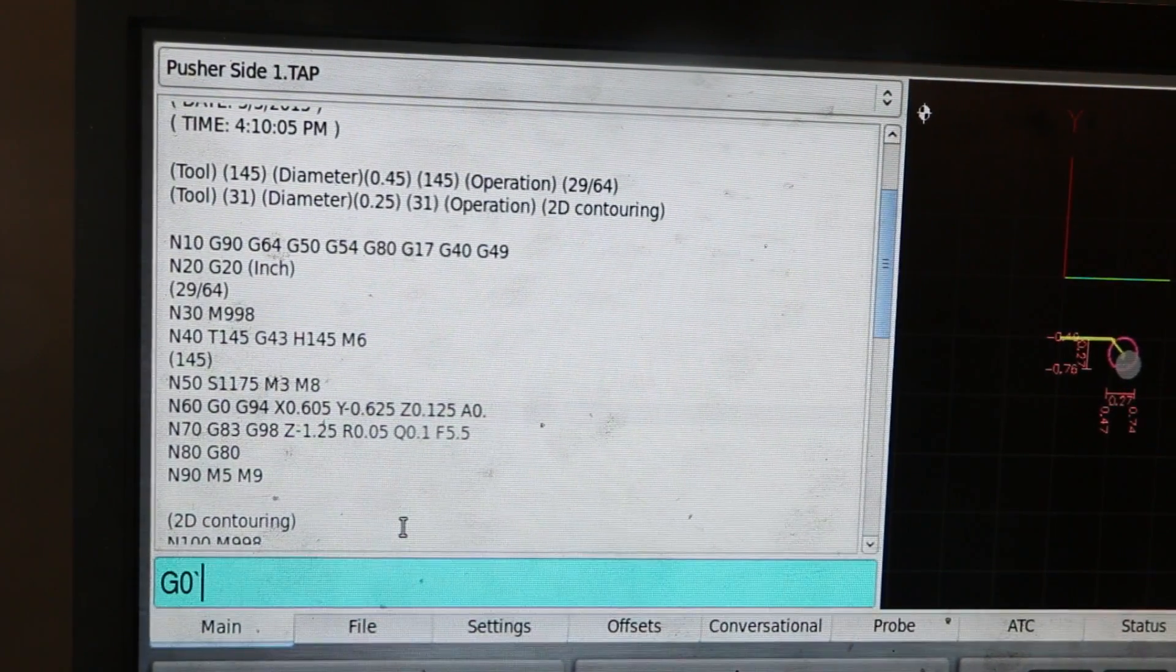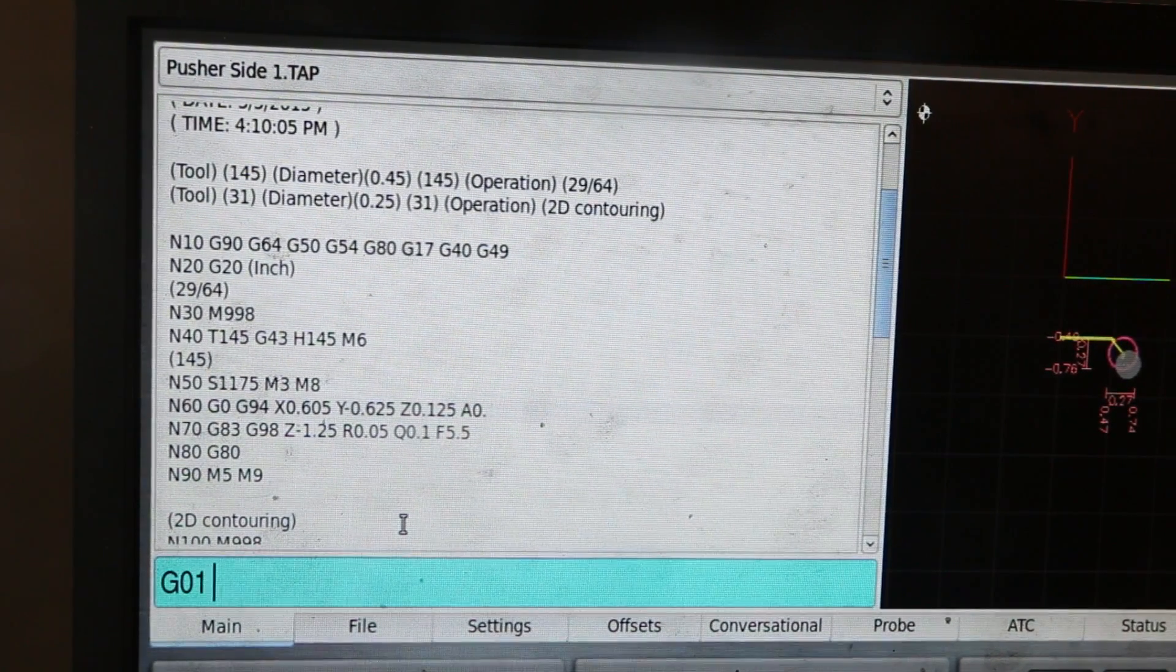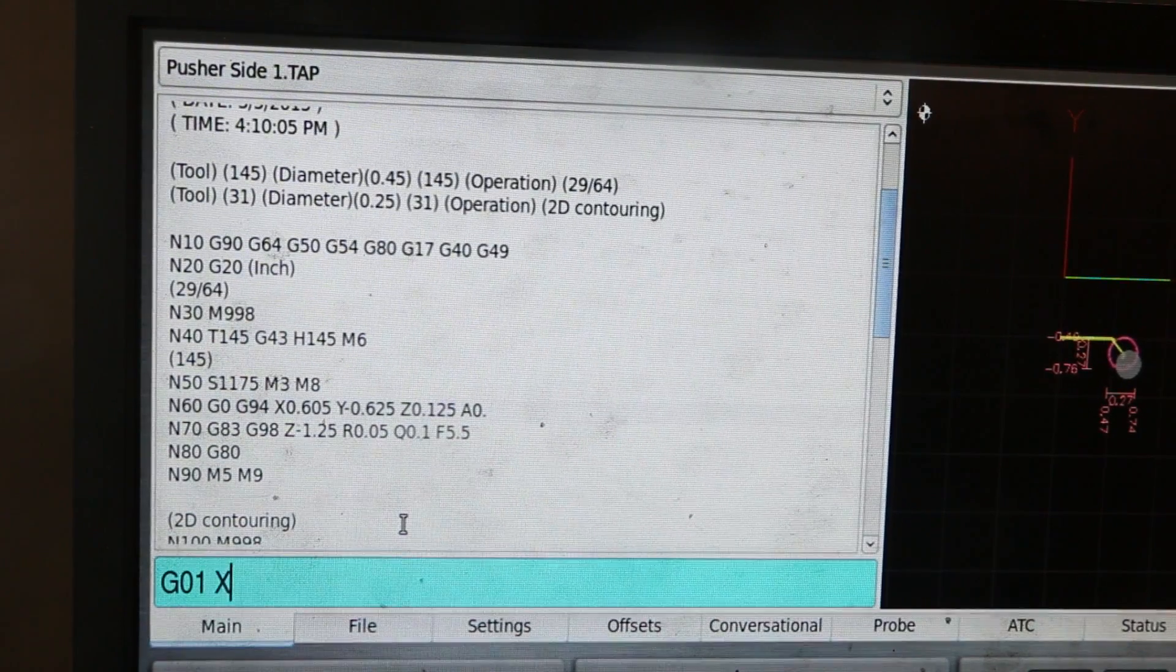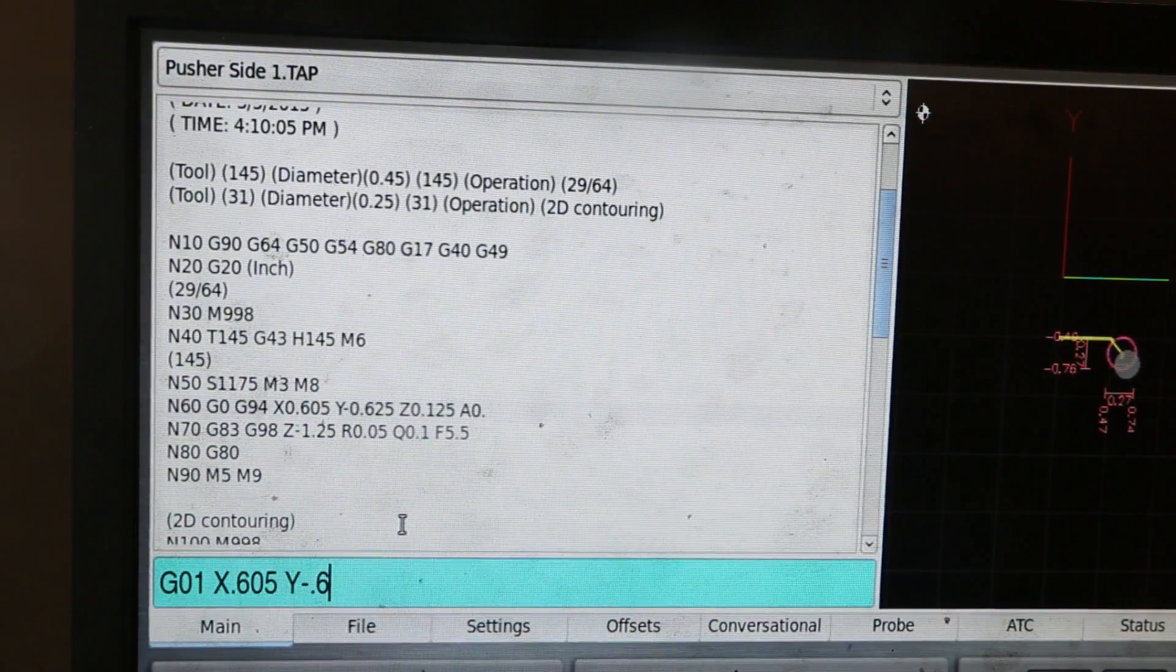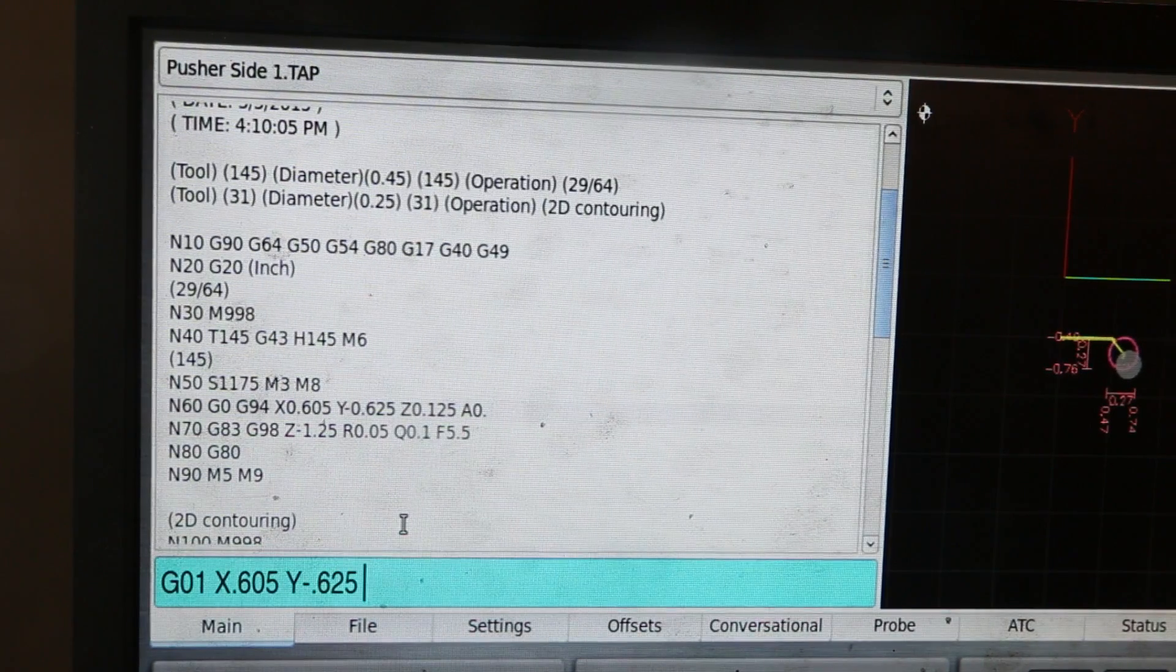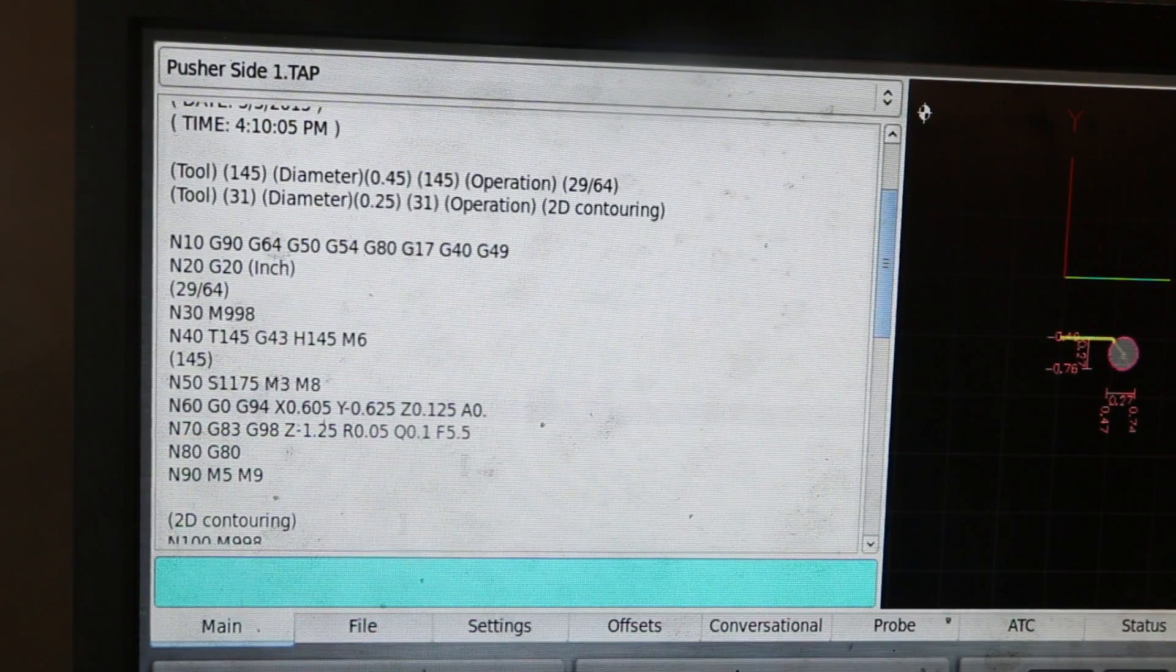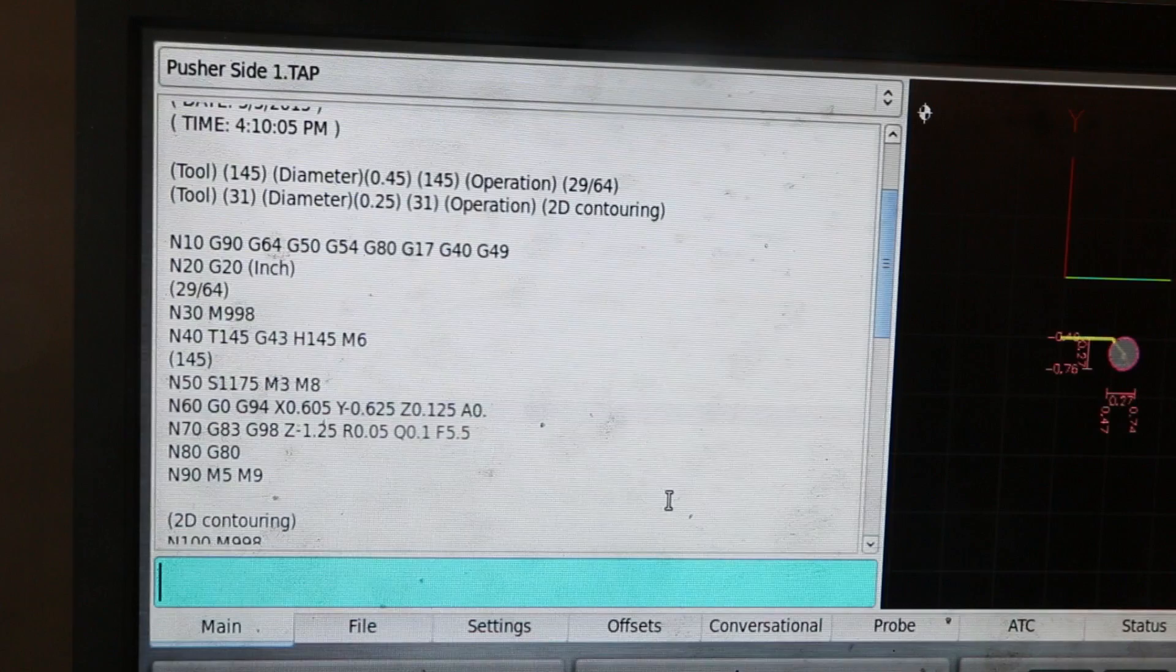G01. I'm hugging the camera as I type, sorry. X 0.605, Y negative 0.625. Just make sure there's no Z in there. That's the thing I always try to make sure. 30 is fine. And boom, we're right there centered. Let's go back and tap this.